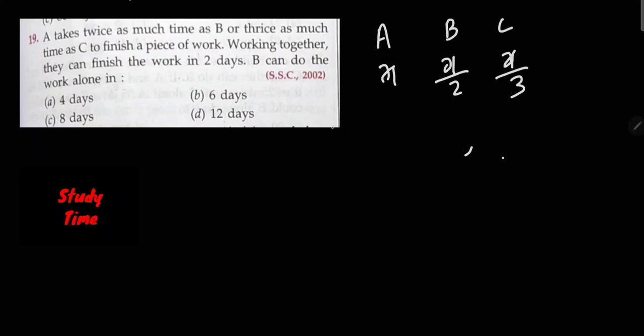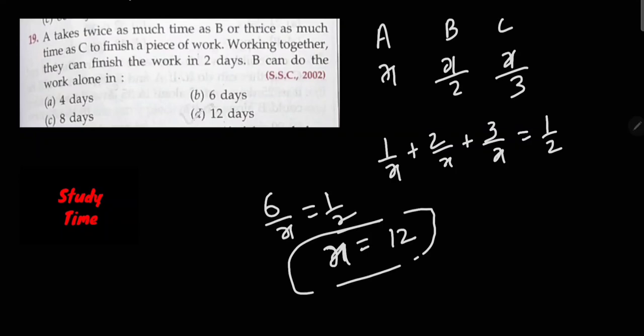Now 1 by x plus 2 by x plus 3 by x equals to 1 by 2. 6 upon x equals to 1 by 2, x equals to 12. X equals to 12 which option will be.